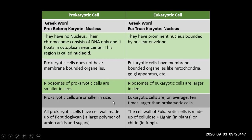Ribosomes are present in both prokaryotic and eukaryotic cells. The ribosomes of prokaryotic cells are smaller in size, while eukaryotic cells are on average 10 times larger than prokaryotic cells. So animal cells, plant cells, fungi, or amoeba — eukaryotic cells are 10 times larger than normal bacteria on average. Viruses are even smaller than bacteria.